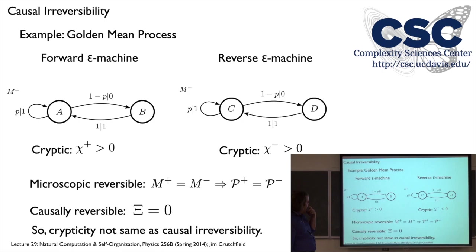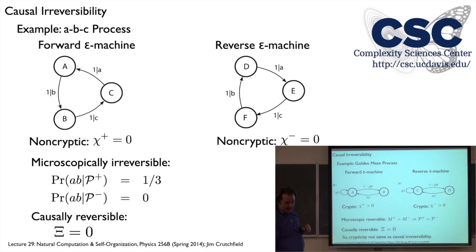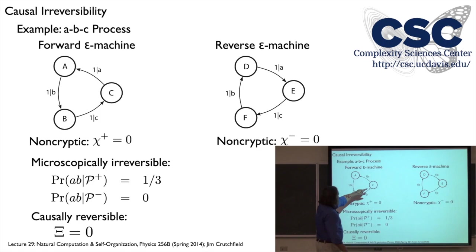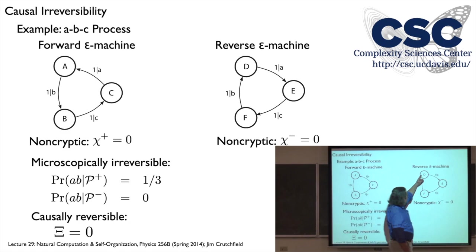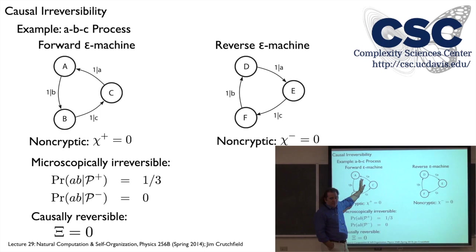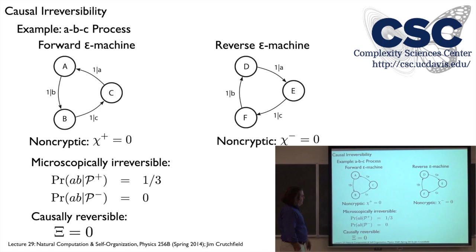An audience question: do you need an alphabet size larger than two to have microscopic irreversibility? That's a good question — intuitively it seems like with just zeros and ones the only restrictions are on consecutive symbols. But the trick is in looking at longer words: with binary alphabet you could have something like 0,1 gives 0,1 and 0,0,0,0,1 and then repeat. It's kind of a hidden larger alphabet.